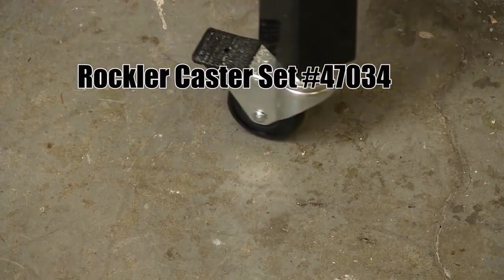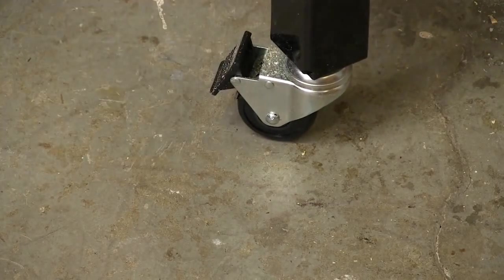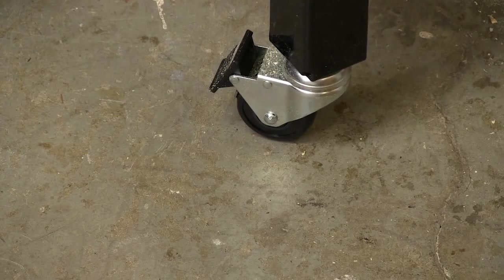The Rockler caster set rolls very easily and when you step on the lever it locks both the wheel and the spindle so it can't turn. Flip the lever back up and you can roll it away.